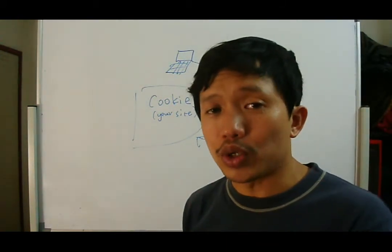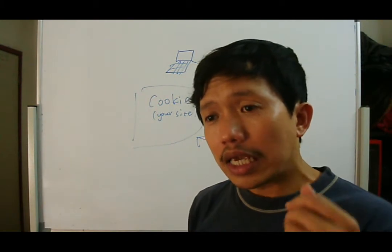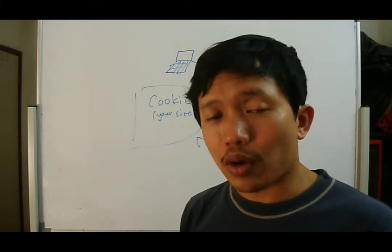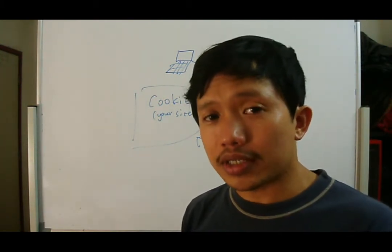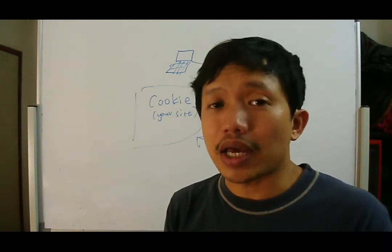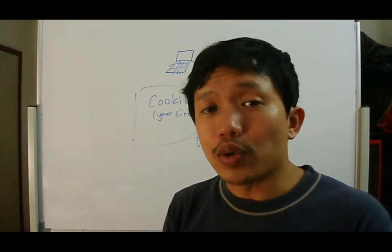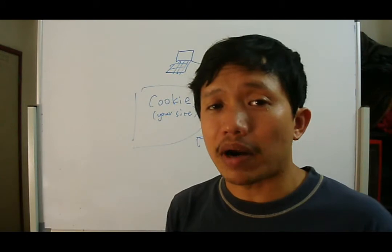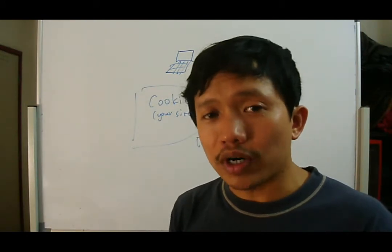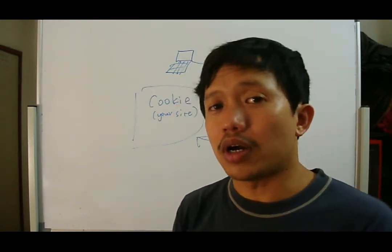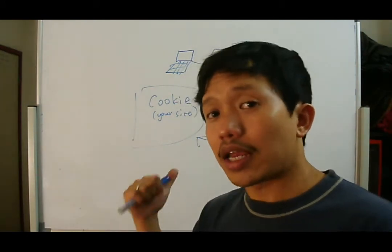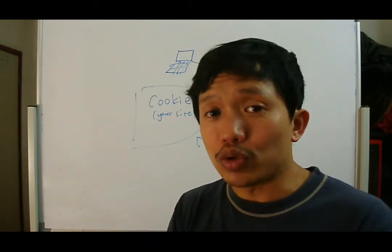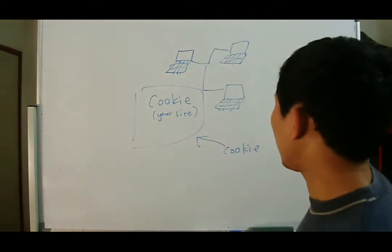It keeps track of your behavior. Imagine you're going to shops one by one and people are actually following you around or stalking you, keeping track of what you're doing and what shops you went into. This is not very comfortable. This is what an active cookie can do — it keeps track of what you do. This is collection of information without consent, and when the cookie does that, it is eroding your privacy.